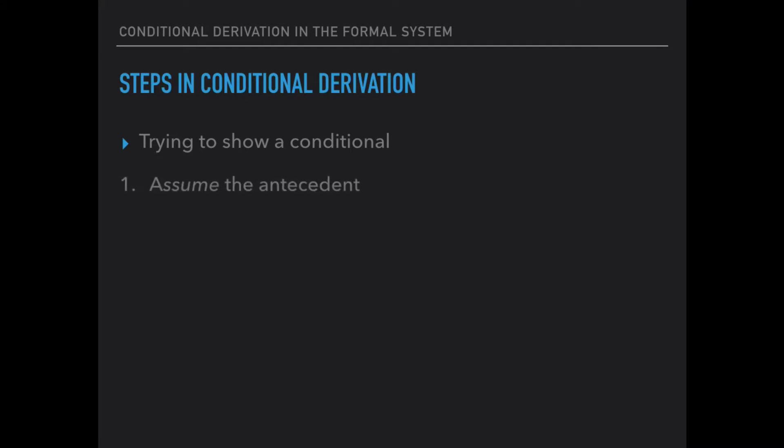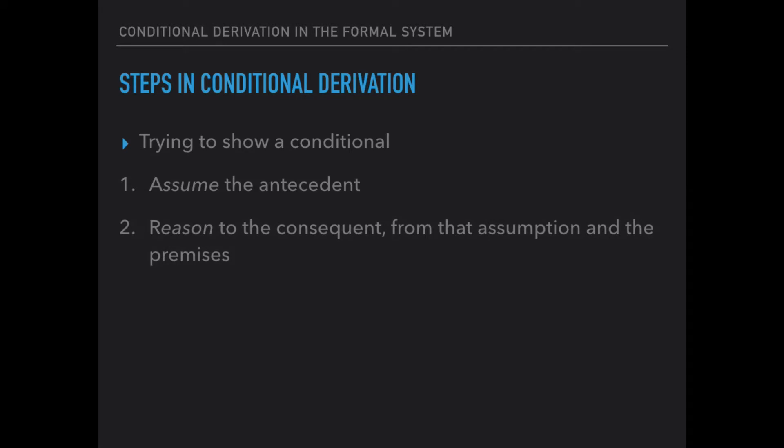The first step is to assume the antecedent of the conditional that we're trying to show. The second part — and this itself has multiple steps — is that we reason to the consequent of the conditional. There's a conditional we're trying to show; we assume the antecedent and reason to the consequent. In doing so, we use our inference rules, relying on whatever premises the argument has and on this assumption that we just made.